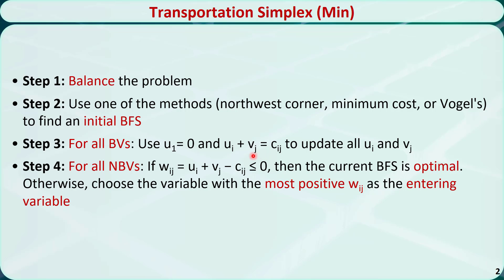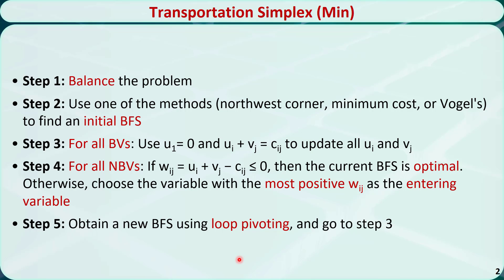Step 4, for all non-basic variables in the basic feasible solution, calculate wij, which is equal to ui + vj − cij. If all the wij are less than or equal to 0, then the current basic feasible solution is optimal. Otherwise, choose the variable with the most positive wij as the entering variable. Step 5, obtain a new basic feasible solution using loop pivoting, and go to step 3.